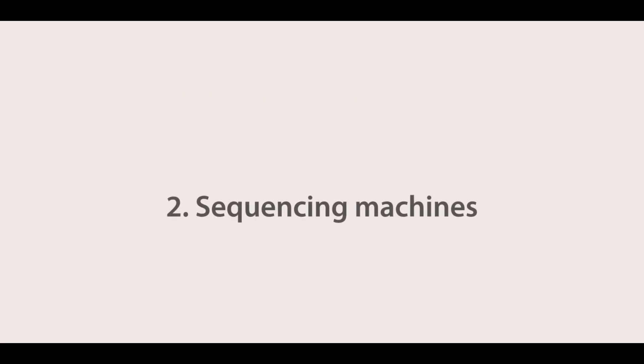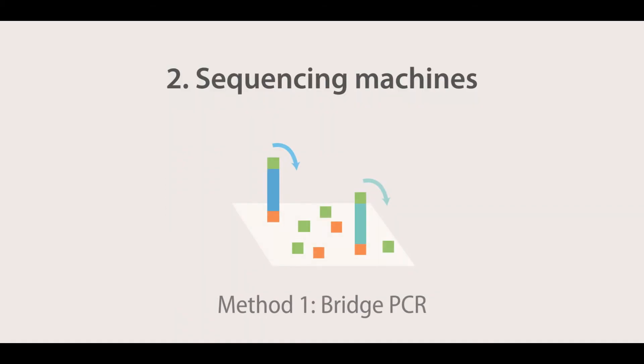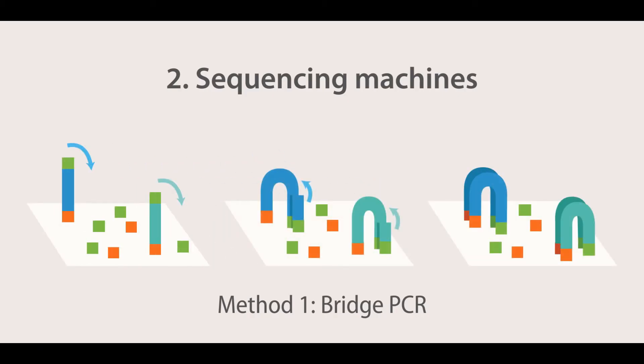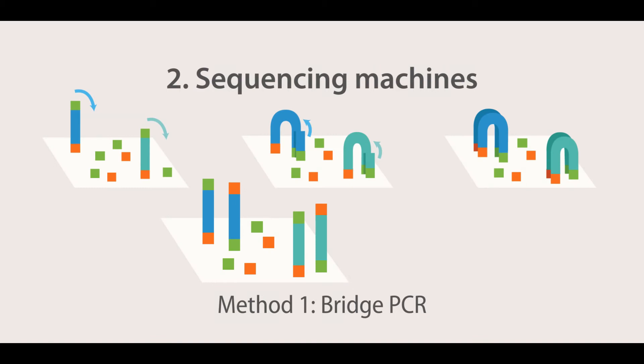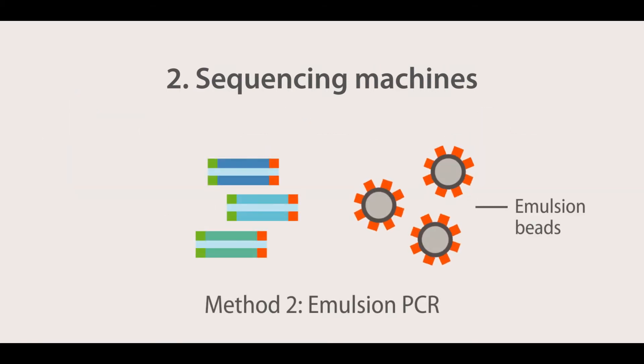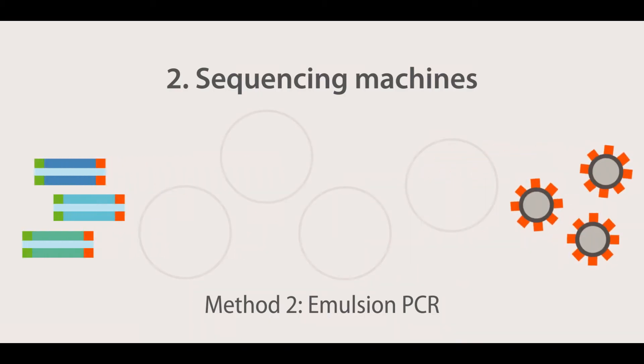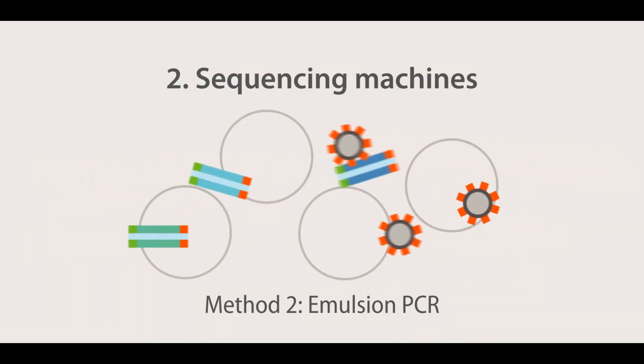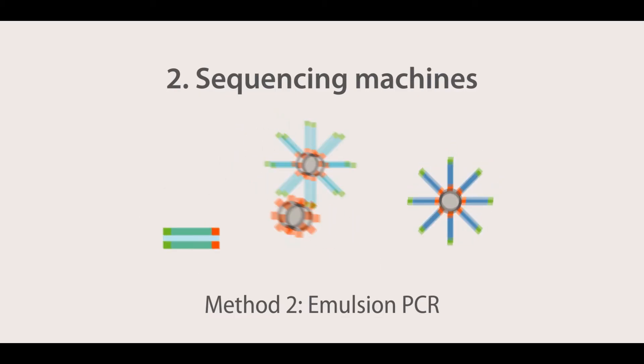Second, sequencing machines. Each library fragment is amplified on a solid surface with covalently attached DNA linkers that hybridize the library adapters. This amplification creates clusters of DNA, each originating from a single library fragment. Each cluster will act as an individual sequencing reaction.